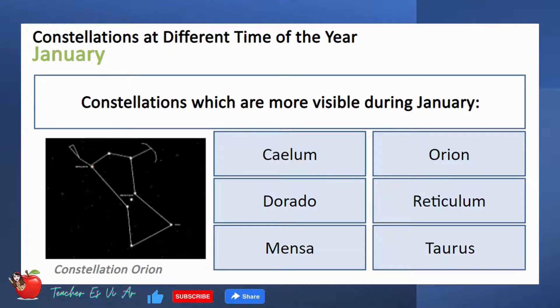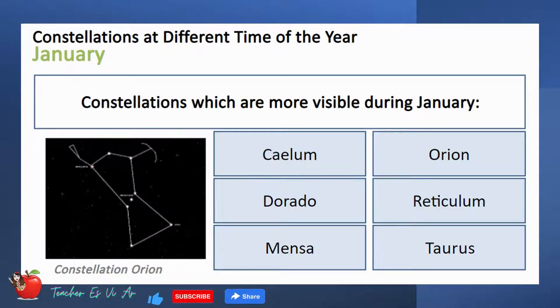Let's start with January. Here are the constellations which are more visible during January: Ceilum, Orion, Dorado, Reticulum, Mensa, and Taurus.